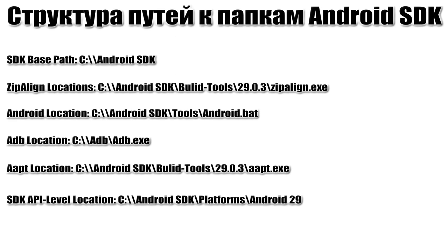For clarity, consider the approximate structure of the necessary folders for these libraries. For Android SDK 32-bit and 64-bit, the paths should look something like this. The 'SDK base path' line specifies the path to the folder with your Android SDK library version. In the 'Zipalign locations' line, specify the path to the folder containing the Zipalign.exe file — go into the Android SDK folder, find the 'build-tools' folder, then select the folder with the version you plan to work with, and inside it is the file you need.